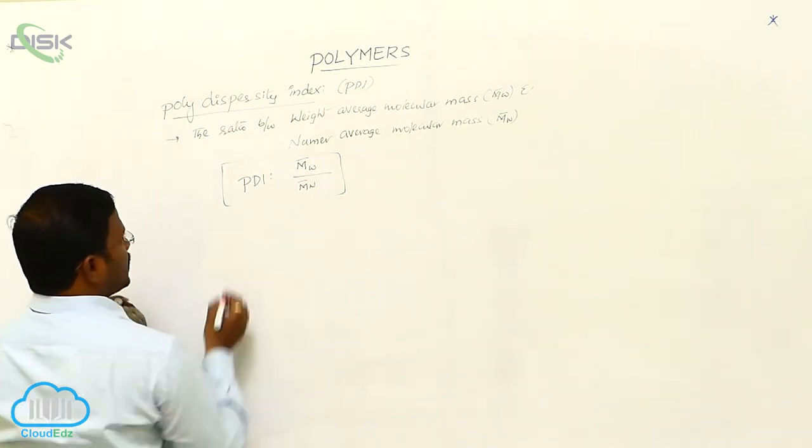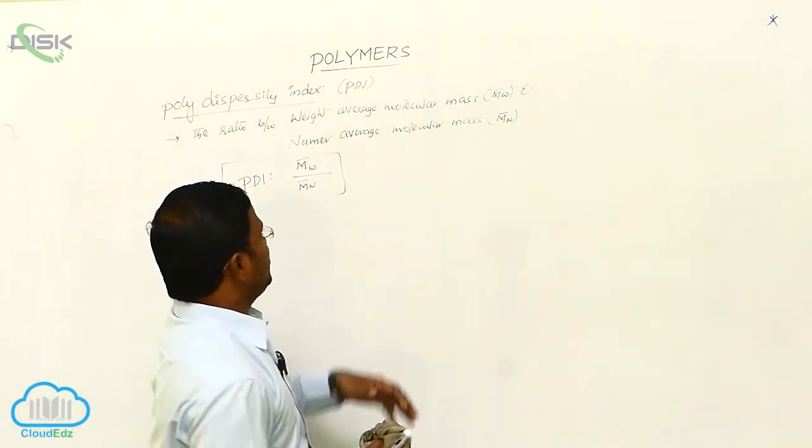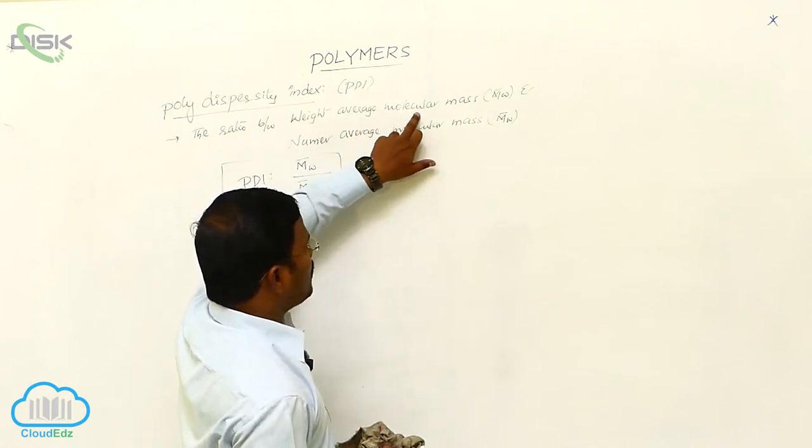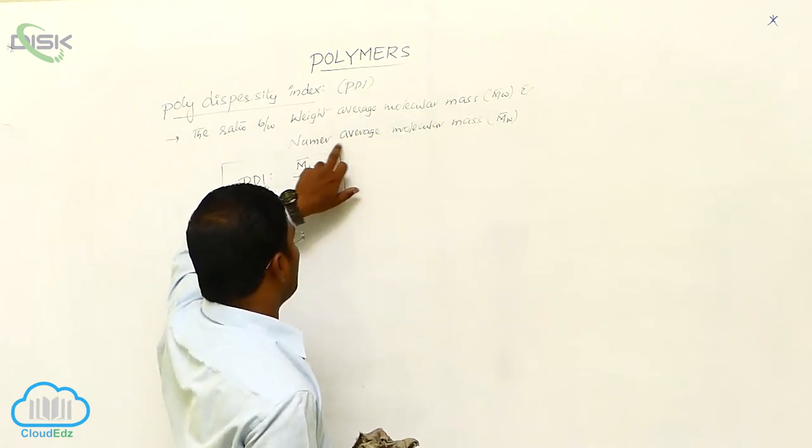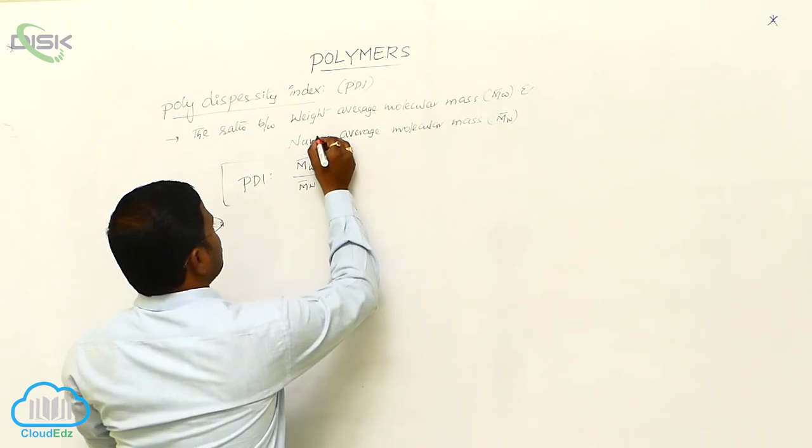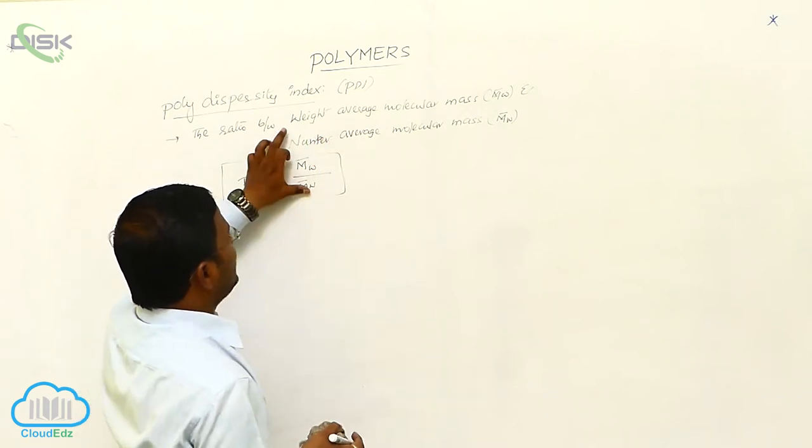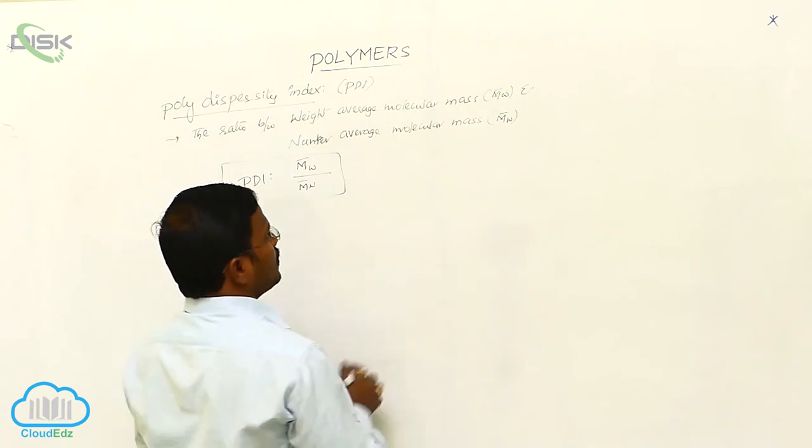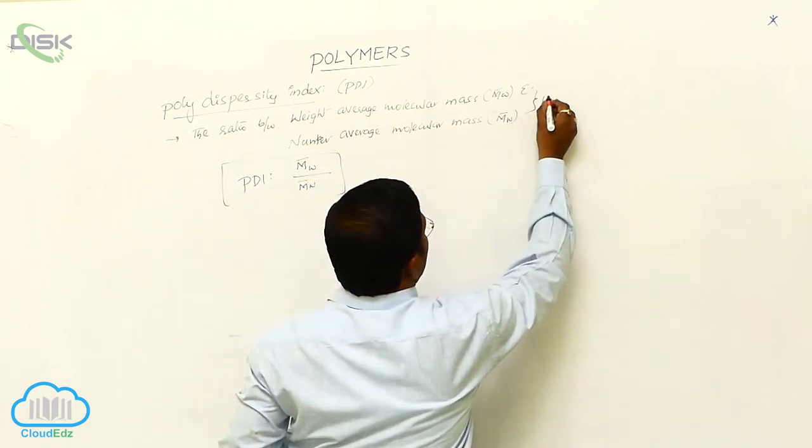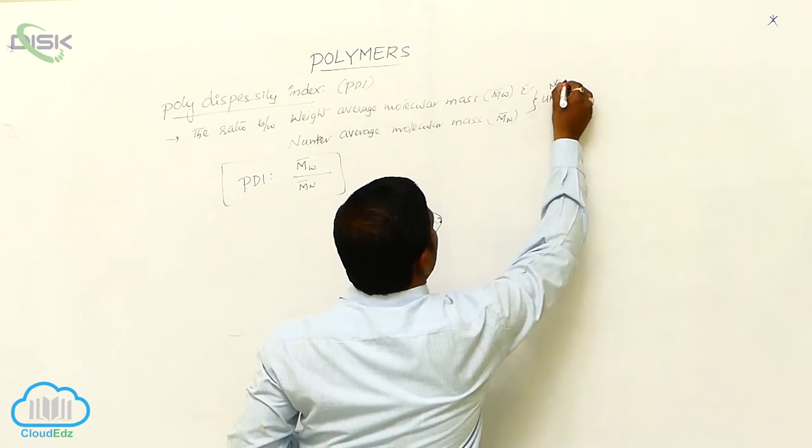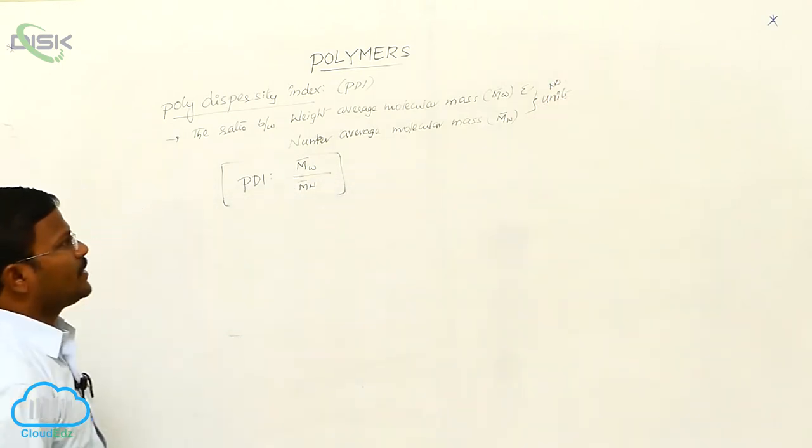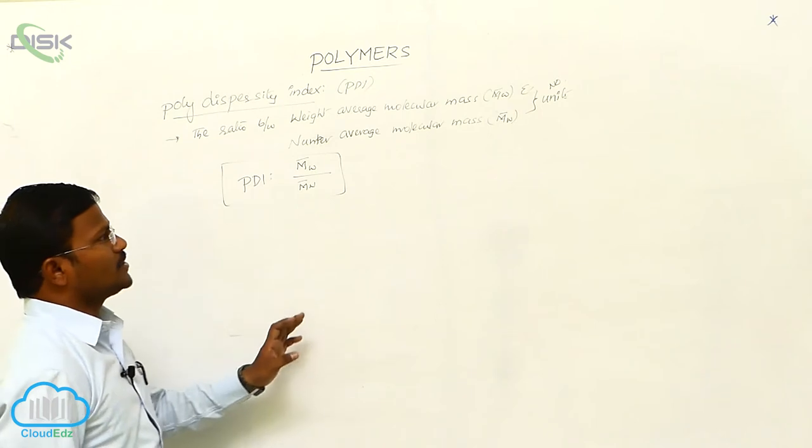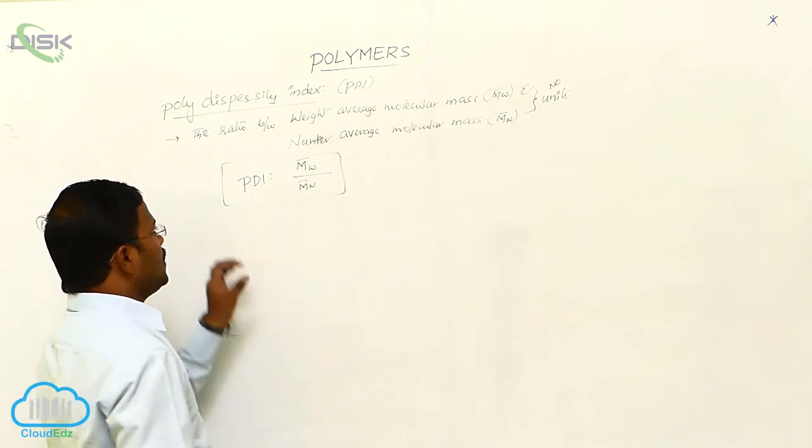We have to remember that weight average molecular mass and number average molecular mass have no units. They are unitless because it is a number.